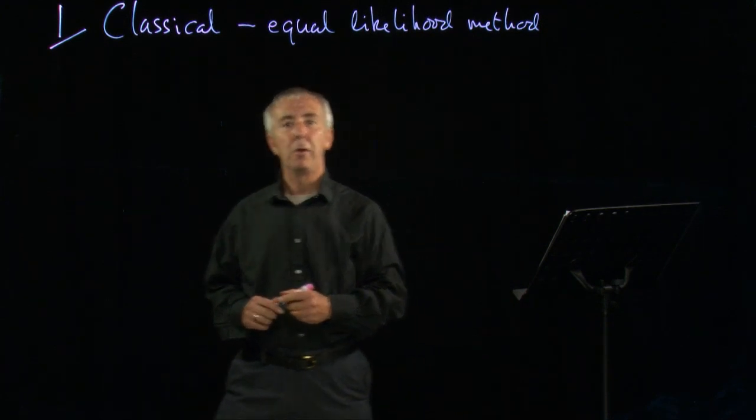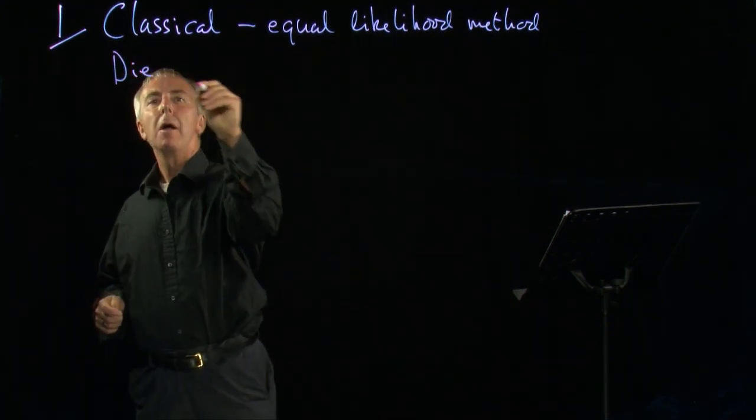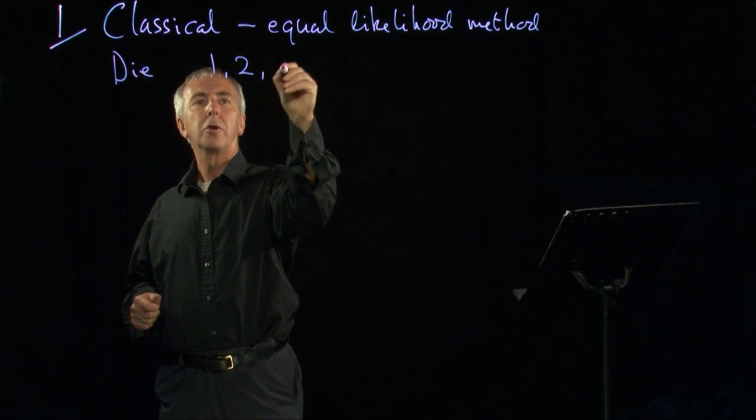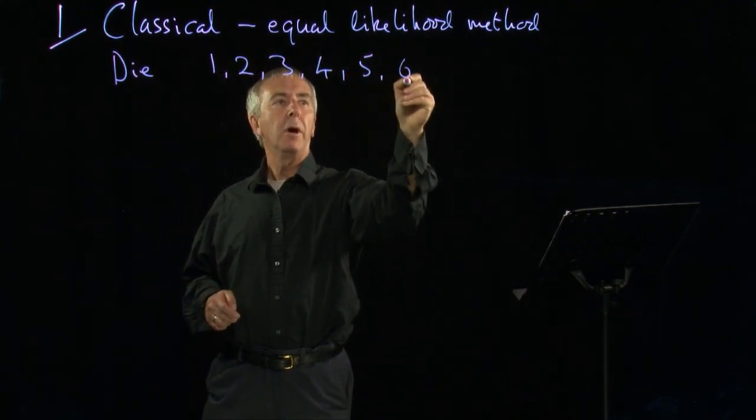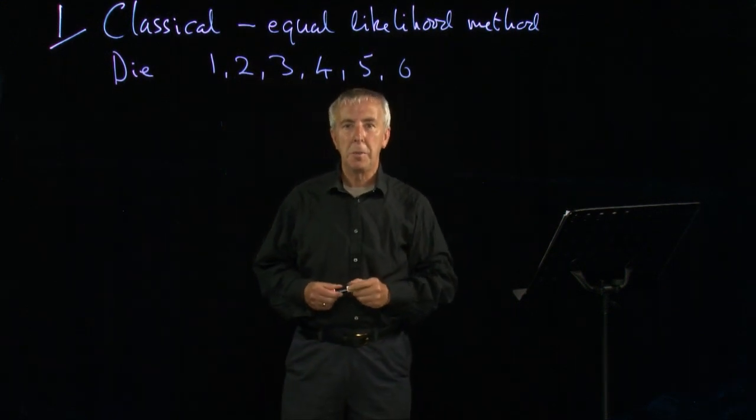So for example, if I roll a die, I can get a one, a two, a three, four, five, or a six. There are six possibilities.